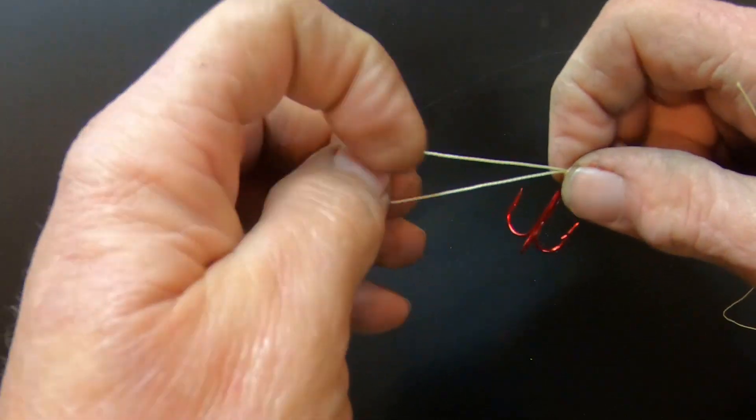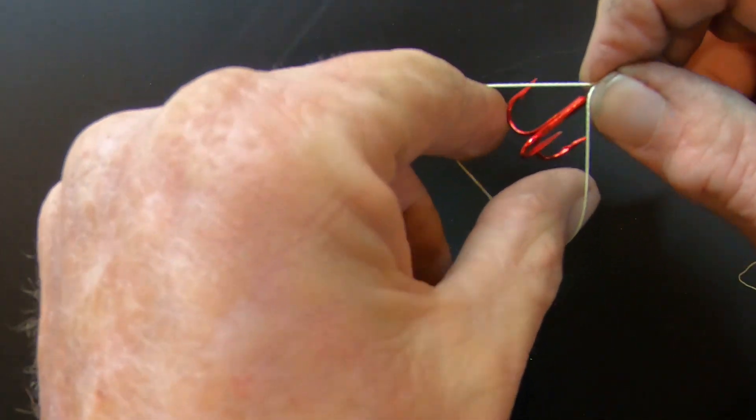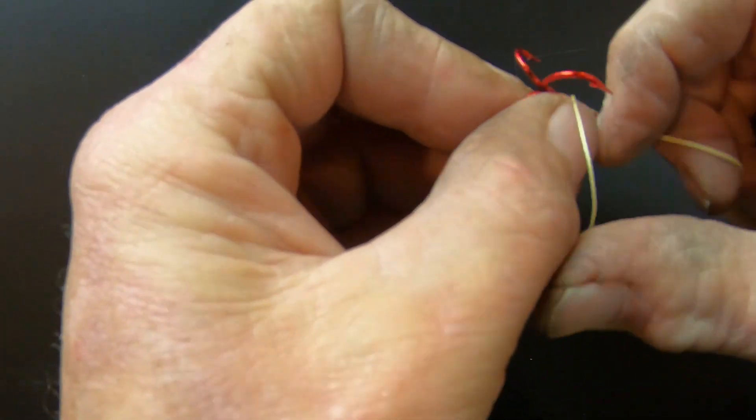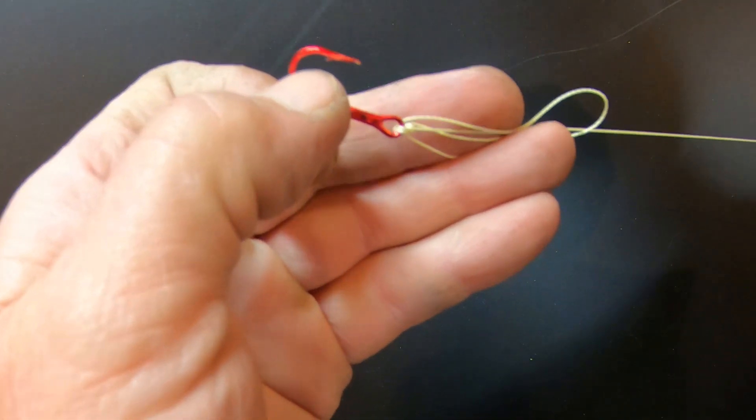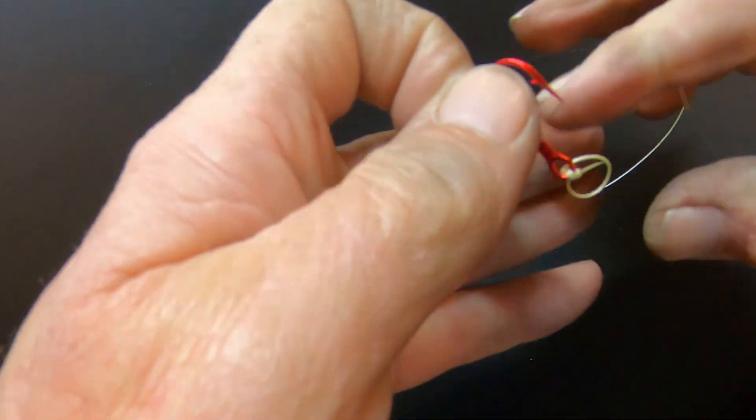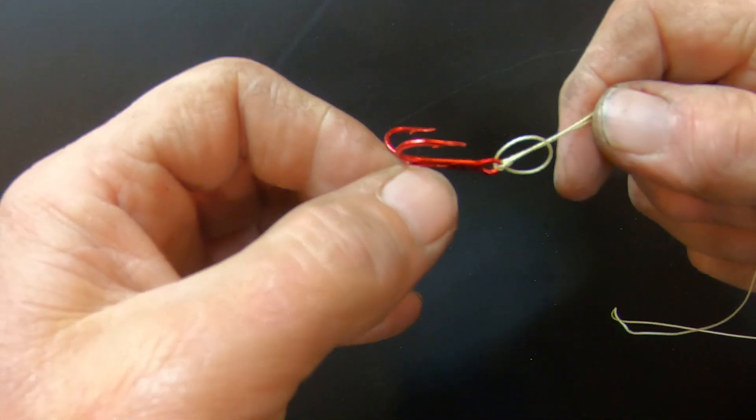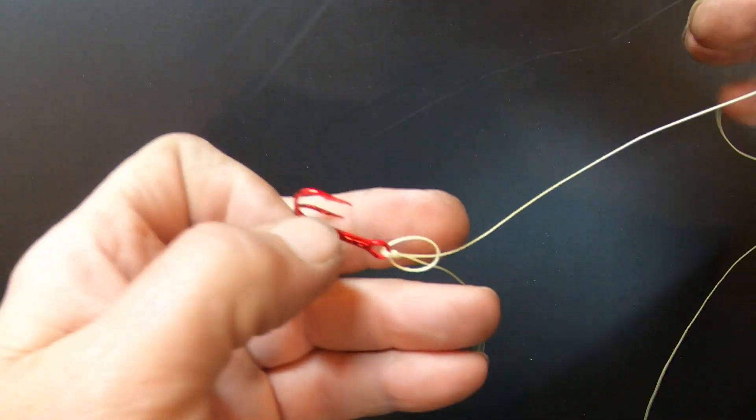Don't tighten it all the way down. Take the hook back through, pull this above, and you pull your line. When you see it get down close, you want to wet it with water or saliva so it doesn't cause a hot spot and weaken the line.